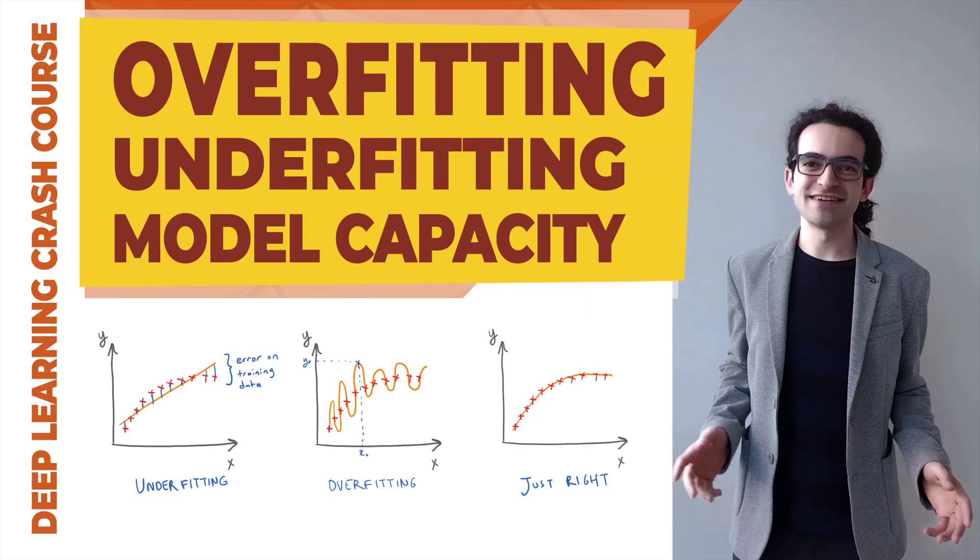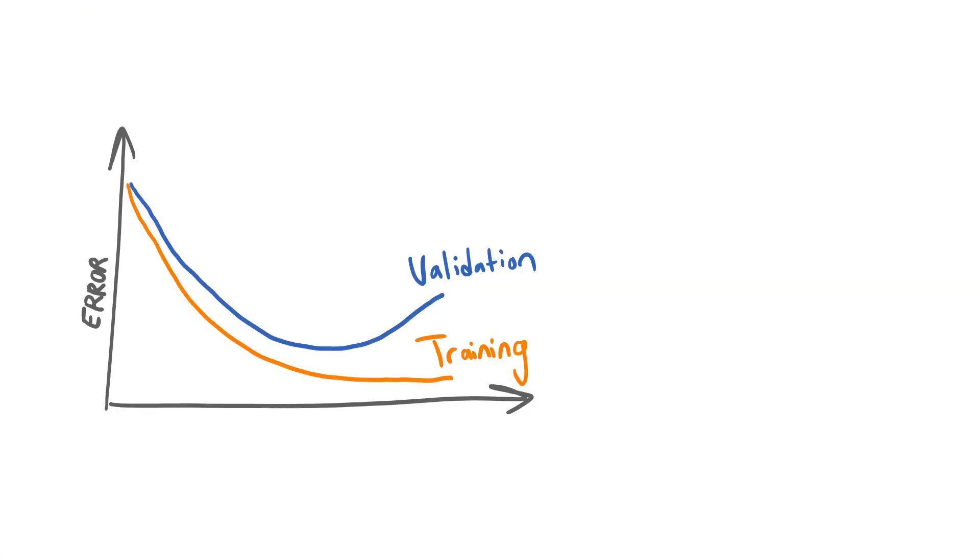In the earlier videos, we discussed the relationship between model size and error. The error of a model on a test set is typically expected to be higher than the error on a training set. This is called generalization gap and is explained by overfitting, where a model starts memorizing the samples in the training set, losing its generalization ability.